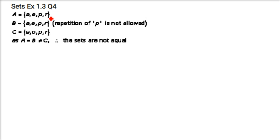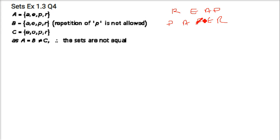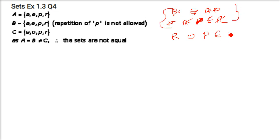Next question: are the following sets equal? A = letters in 'REAP' = {R, E, A, P}. B = letters in 'PAPER' = {P, A, P, E, R} — removing the repeated P gives {P, A, E, R}. C = letters in 'ROPE' = {R, O, P, E}. A and B are exactly the same, so they are equal. But C contains O, which is not in A or B, so C is not equal to them.